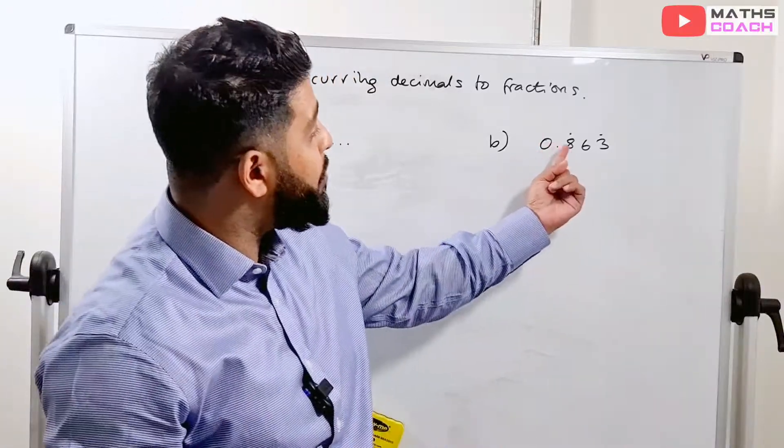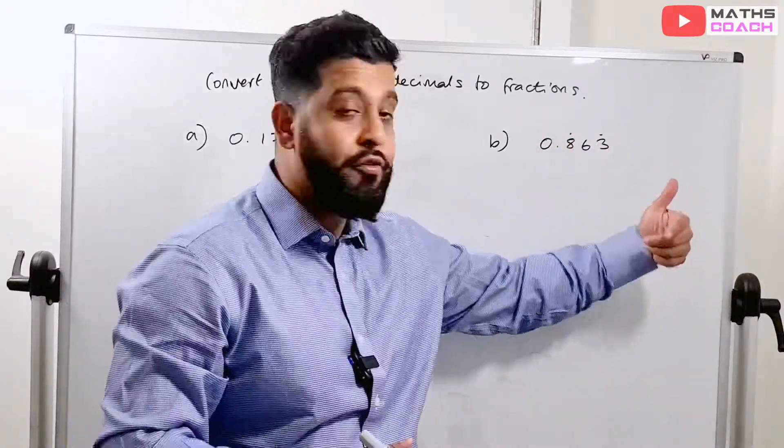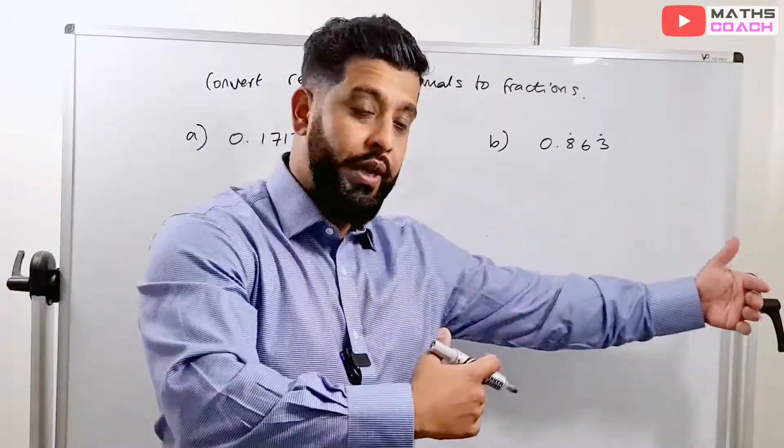Other times, you might see that it has a dot above certain numbers. So in this case, it's got a dot above the eight and the three. That simply means that everything in between eight and three, inclusive of eight and three, continues. So in this case, it will be 0.863. The next number would be 863, 863, 863, all the way on.